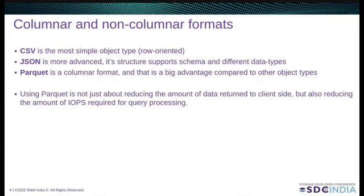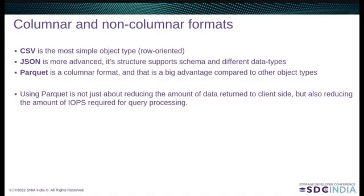Columnar and non-columnar formats: CSV is the most simple format — it does not support data types and has trivial schema support. Almost every log file could become a CSV object. JSON is a more sophisticated format; it supports data types and schema. Upon processing a query, both formats must be read and scanned completely. Parquet, on the other hand, is a columnar format that provides significant performance advantage. Parquet is a highly advanced object — it contains enough metadata to enable the user to access only the data needed for query processing. That means using a Parquet object not only saves network bandwidth but also saves a lot of IOPS on the server side.